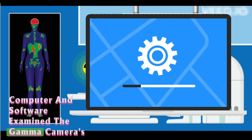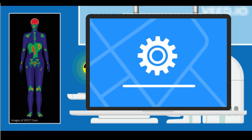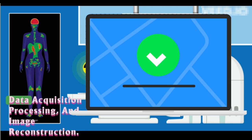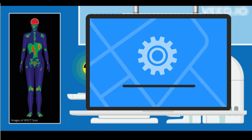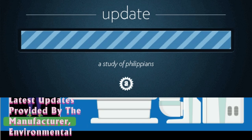Computer and software: Examine the gamma camera's computer system and software for any malfunctions. Software glitches or hardware issues can impact data acquisition, processing, and image reconstruction. Keep software up to date with the latest updates provided by the manufacturer.